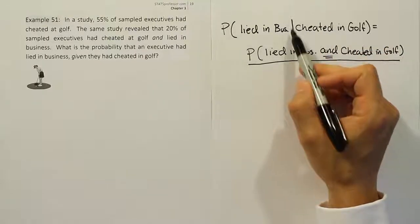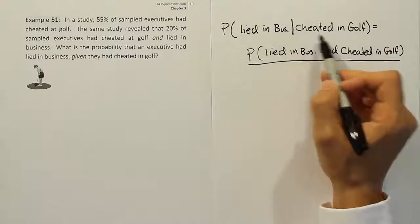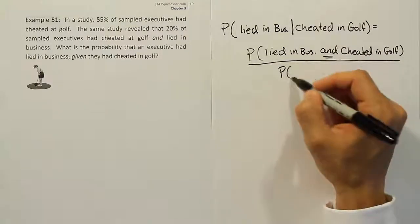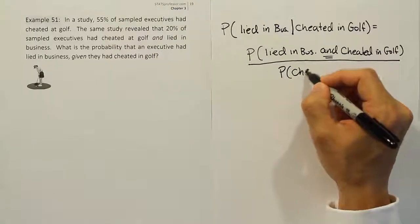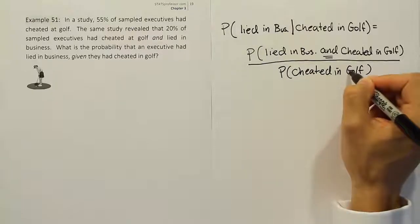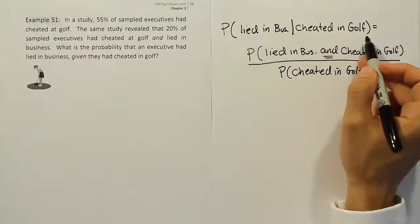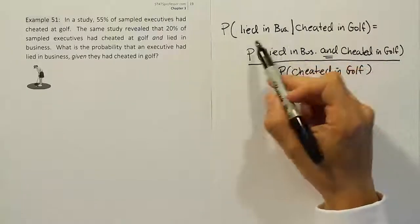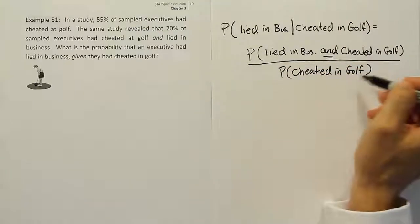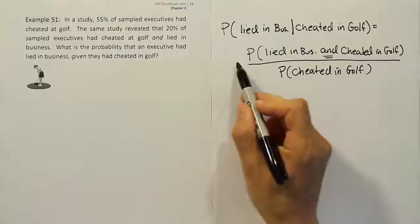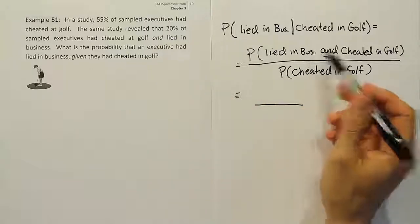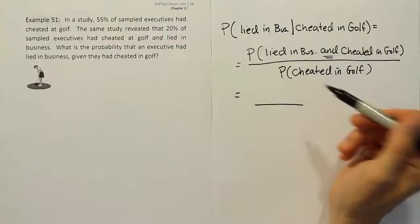And then the bottom is just the second piece here. So this is not a fraction bar, but if it was a fraction bar, that would be your denominator. So that's an easy way to remember that this one goes at the back end or the bottom here. So then cheated in golf, because we're assuming that this condition has been met in order to ask this first question - probability that lied in business given that they cheated in golf. So that becomes your total or your denominator.